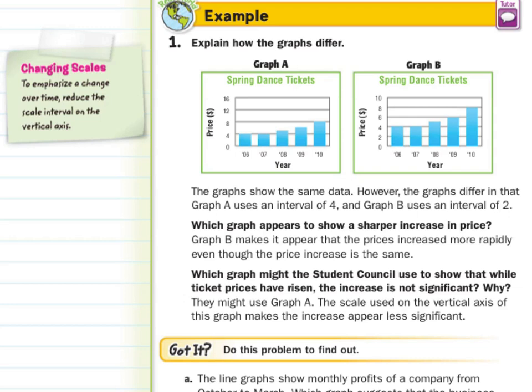The graphs show the same data. 2006 was 4 on both. Graph A uses the interval of 4: 0, 4, 8, 12, 16. Graph B uses an interval of 2: 0, 2, 4, 6, 8, 10.